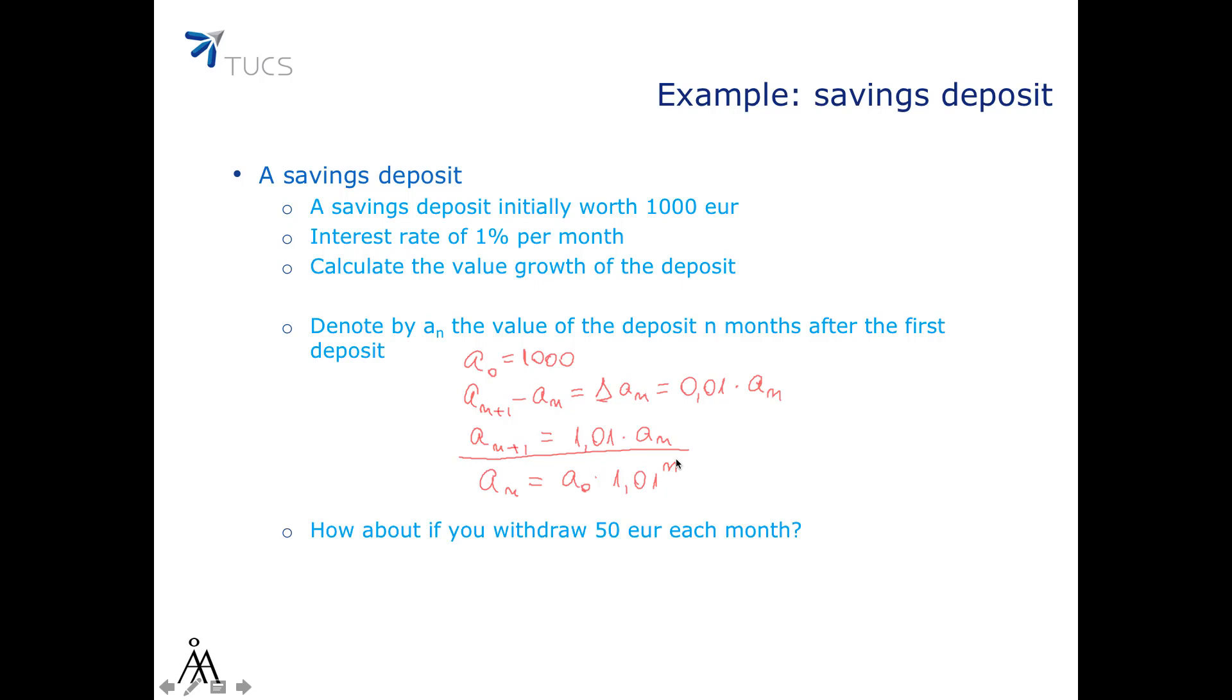As a slight variation, we can also ask what happens if you withdraw 50 euros each month. In this case, the change in the deposit from one month to another is given by the interest we gained minus the sum we withdrew. In other words, we can write the model as follows: a(n+1) minus a(n) is 0.01 times a(n) minus 50. So, the model in this case is going to be a(n+1) equals 1.01 times a(n) minus 50. It's a little less obvious what the general form of the model is in this case, and we will return to this in a later video.